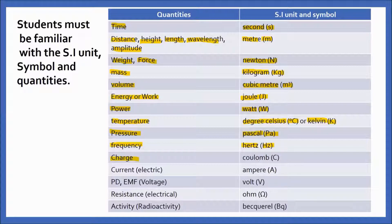Charge: the SI unit is coulomb and the symbol is C. Current, that is electric current: the SI unit is ampere and the symbol is A. PD or EMF or voltage: the SI unit is volt, the symbol is V. Resistance, that is electrical resistance: the SI unit is ohm, the symbol is omega. From radioactivity topic, activity: SI unit is Becquerel with the symbol Bq.